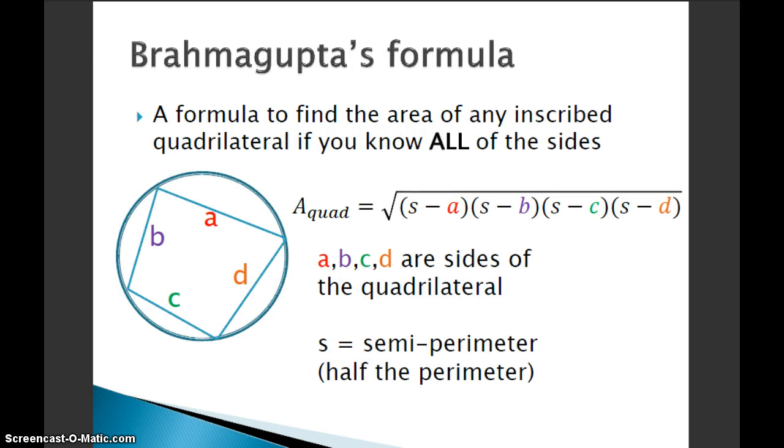The other formula is Brahmagupta's Formula. So this formula is used if you have an inscribed quadrilateral, and that's the key. It's not going to be a matter of any quadrilateral, it has to be inscribed inside of a circle. So the area of that inscribed quadrilateral, also called a cyclic quadrilateral, is the square root of S minus a times S minus b times S minus c times S minus d, where a, b, c, and d are the sides of the quadrilateral, and S again is the semi-perimeter.